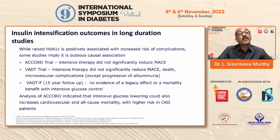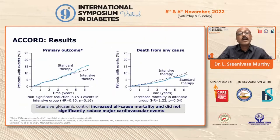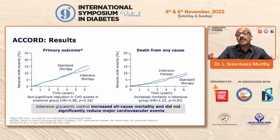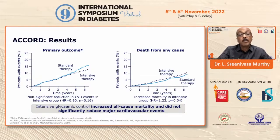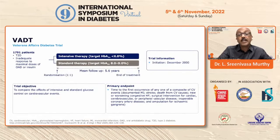Regarding insulin intensification outcomes in long-duration studies — ACCORD, ADOPT, and VADT — analysis of ACCORD indicated intensive glucose lowering could also increase CV mortality. Looking at the median A1C at each study visit, the increased all-cause mortality was seen in the intensive glycemic arm, probably attributed to hypoglycemia, but it did not significantly reduce major CV events. In the VADT — Veterans Affairs Diabetes Trial — again, no improvement was seen in the rate of overall survival or primary outcome of time to first major CV event.